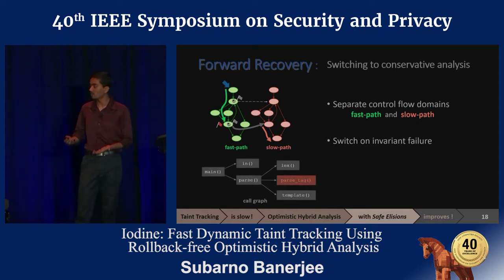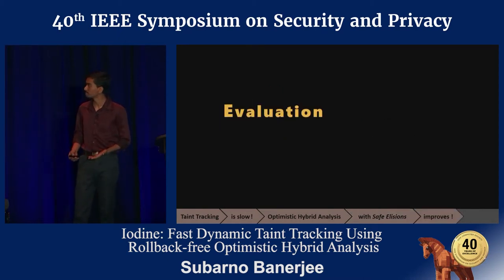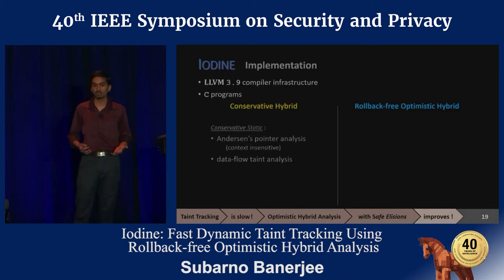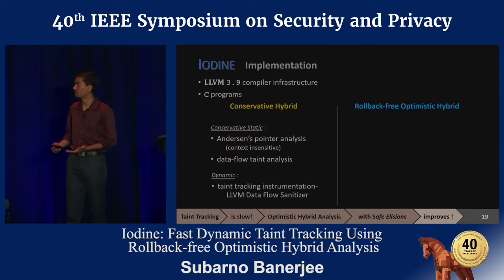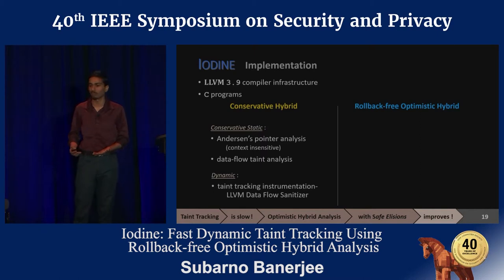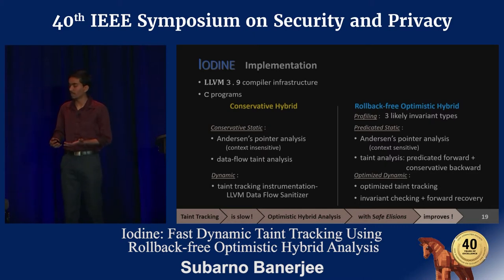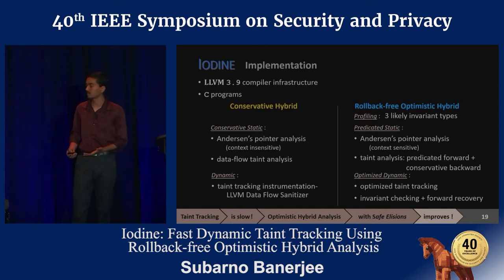We implement Iodine using the LLVM compiler infrastructure for C programs. It implements two variants of hybrid taint tracking. The conservative analysis uses pointer and data flow analysis to identify instructions that propagate taints and only instruments them using a state-of-the-art pure dynamic tracking framework, LLVM's DataFlowSanitizer. The rollback-free optimistic variant performs profiling followed by predicated pointer analysis, and the taint analysis uses predicated forward reachability combined with conservative backward core reachability. The resulting dynamic analysis is more optimized, and we also add the invariant checks and the recovery mechanism.